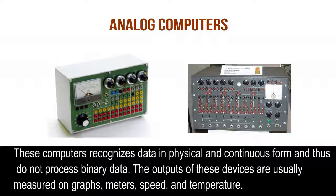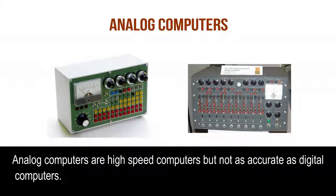Analog computers recognize data in physical and continuous form, and thus do not process binary data. The attributes of these devices are usually measured on graphs, meters, speed, and temperature. Analog computers are high-speed computers but not as accurate as digital computers.